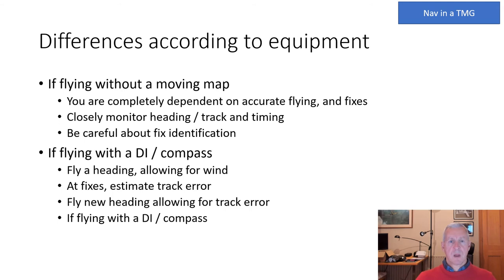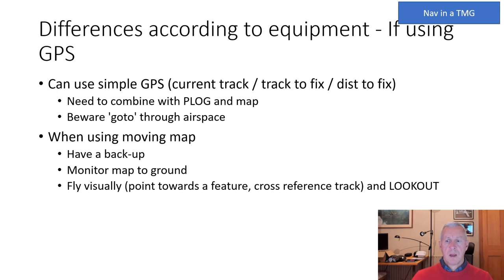Equipment differences matter. Without a moving map, you're fully dependent on accurate flying, fixes, and timing — monitor heading carefully. With only a compass and no GPS track, fly the heading allowing for wind and make manual track error estimates. With a simple GPS giving track and distance to fix, combine it with a pilot log and map as a direct GPS go-to might route through airspace. With a moving map, keep a paper map backup, monitor map-to-ground, but still fly visually towards a feature and maintain good lookout.